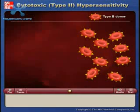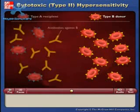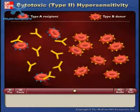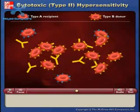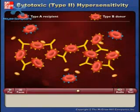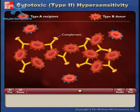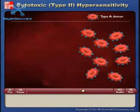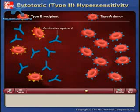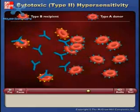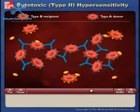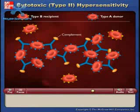If blood from a person who is type B is transfused into a person who is type A, antibodies present in the type A blood react with the surface antigens on the incoming red blood cells. Similarly, if blood from a type A person is transfused into a type B person, antibodies in the type B blood react with the surface antigens on the incoming red blood cells. This leads to complement fixation and cell lysis.